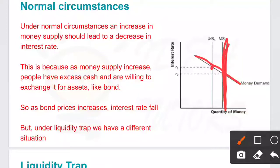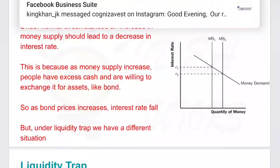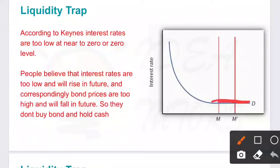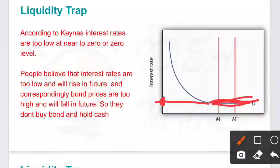But in a liquidity trap we don't have this fall in interest rate even though the money supply is increased. If you look at this area of the demand curve, even when money supply is increasing we have the same interest rate — the level of interest rate is same as this red dot. According to Keynes, in this situation interest rates are too low, near to zero. When interest rates are near zero, people will not be willing to buy bonds because they are earning no interest. People believe interest rates are too low and will increase in the future, so they will buy bonds in the future.